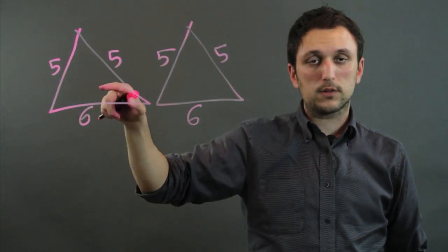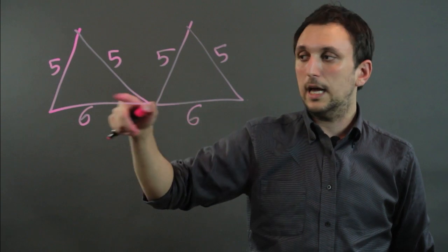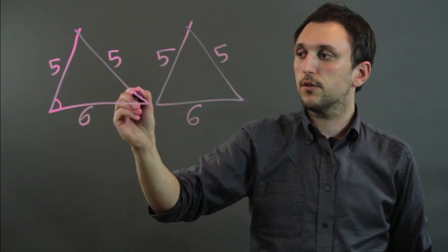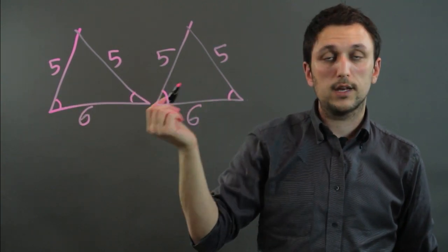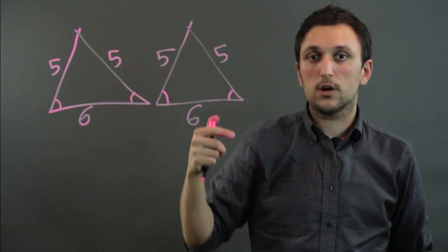Well, these are isosceles because two of the sides are equal and two of the angles are equal. This angle and this angle, and then this angle and this angle. These are definitely congruent because the sides are.